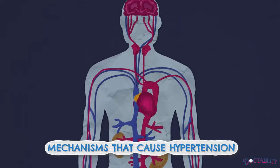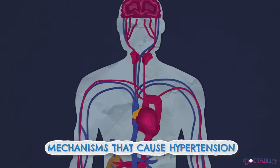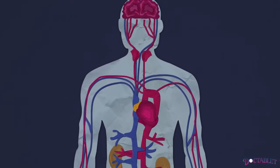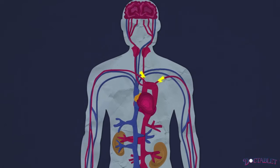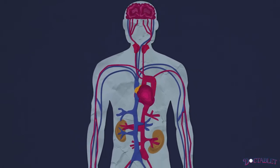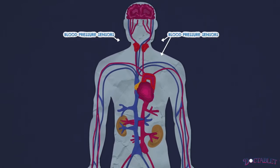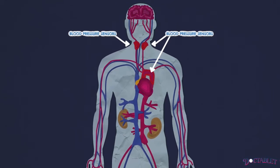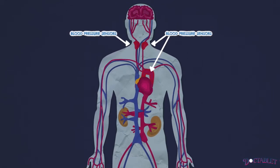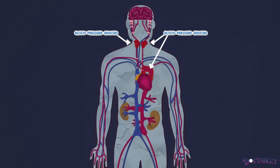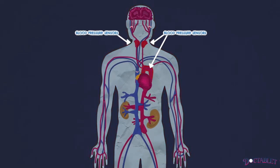Inflammation caused in our bodies by the repetitive injuries of things like alcohol, diabetes, and smoking leads to the destruction of sensitive pressure receptors in our arteries. These sensors help regulate blood pressure, and their loss leads to abnormal pressure elevations.